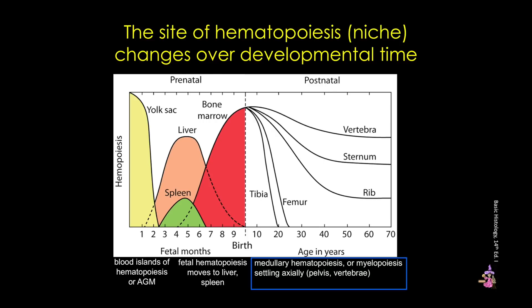In children, all spongy or trabecular bone produces blood cells. But in adults, production becomes limited to the vertebrae, pelvis, sternum, ribs, and proximal ends of the long bones. These cells will continually leave the marrow and enter the blood. The circulating hematopoietic stem cells will either return to the marrow, or they'll migrate to peripheral organs where they exit via lymphatic vessels.